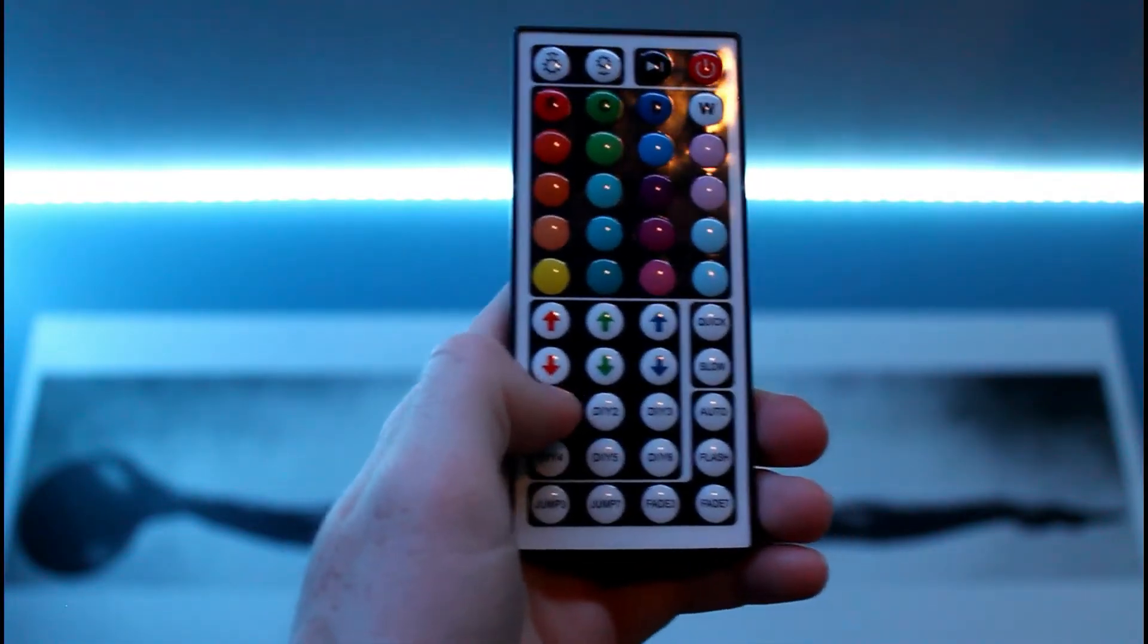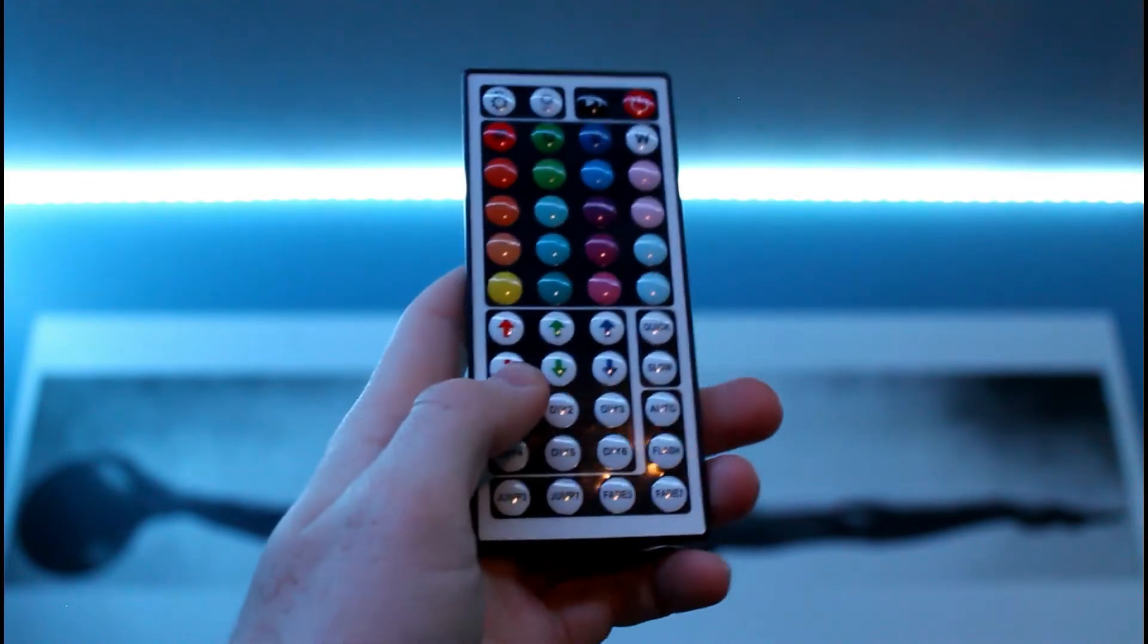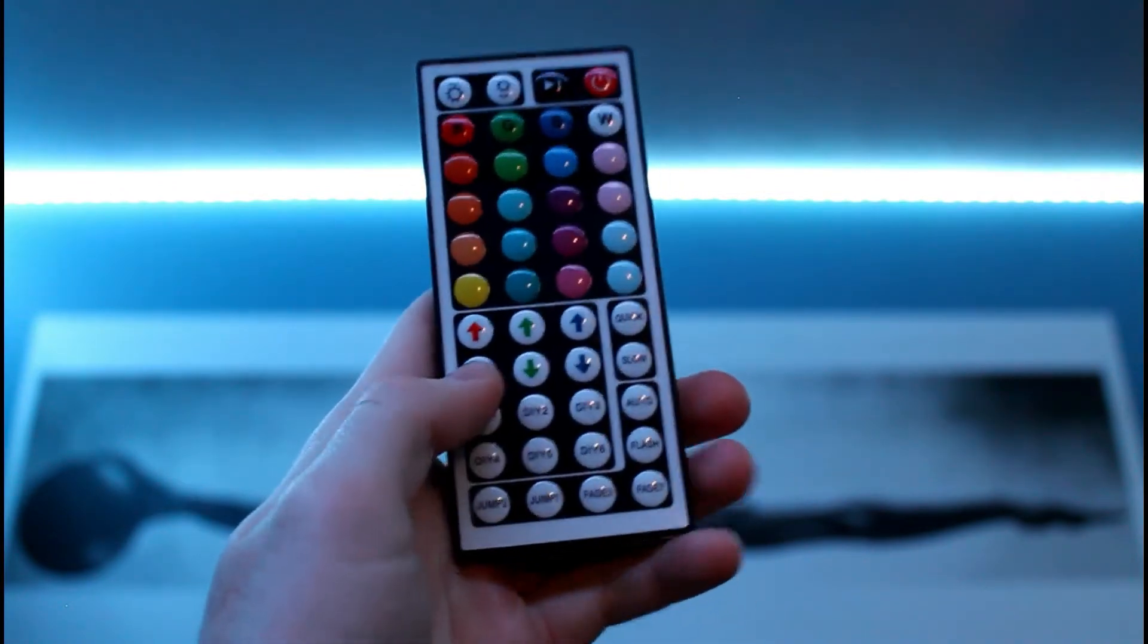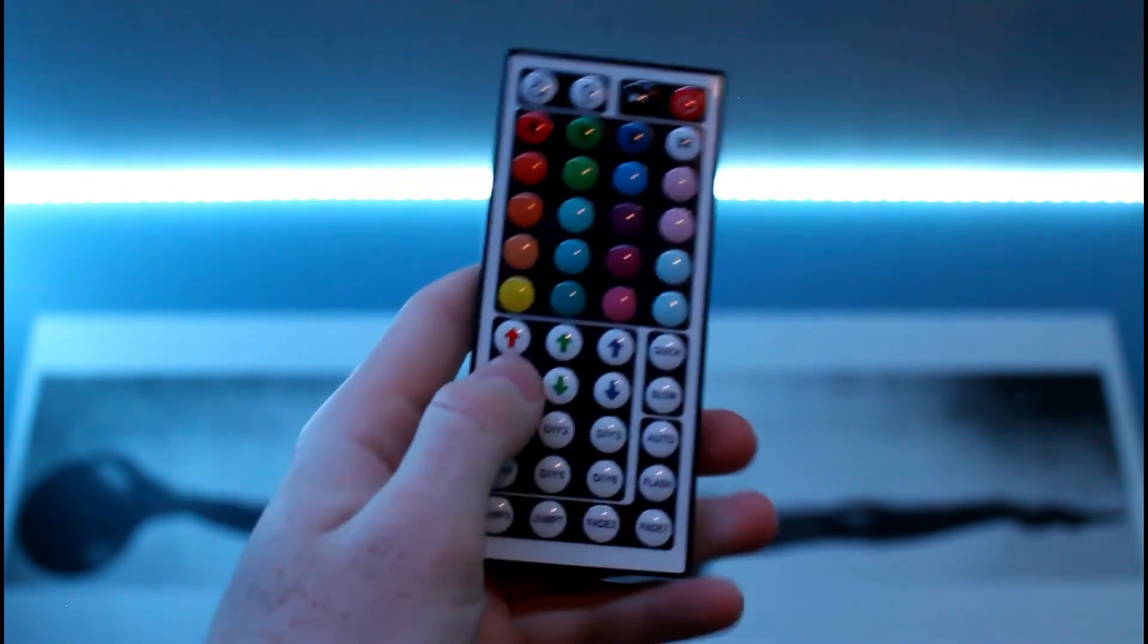So when you press a new DIY preset, it's going to come out as white. That's because each one of these three colors, red, green, and blue, is turned all the way up.